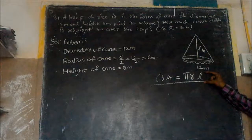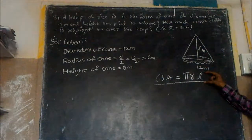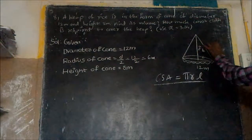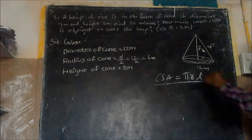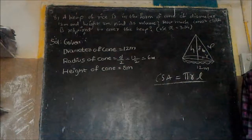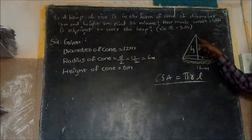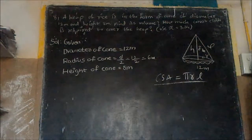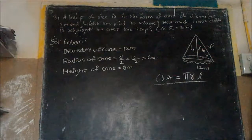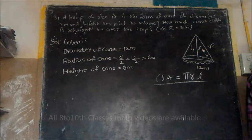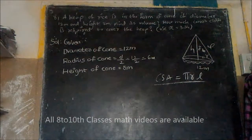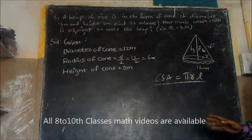We need L to find the curved surface area of the cone. There is a relation between slant height, height, and radius: L squared equals R squared plus H squared, because this is in the form of a right angle triangle. The hypotenuse squared equals the sum of squares of the other two sides — the slant height squared equals height squared plus radius squared.